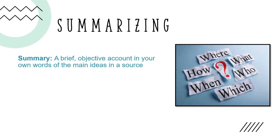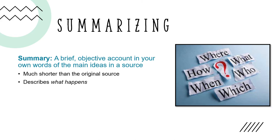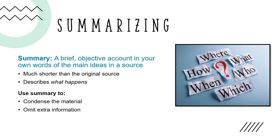A summary is a brief objective account in your own words of the main ideas in a source. A summary is always much shorter than the original source and describes what happens. Use summary to condense the material, which may help you reduce the overall information to draw out the main points that relate to your paper. Summarizing can also help you omit extra information from the source material that is unnecessary in order to focus on the author's main points.